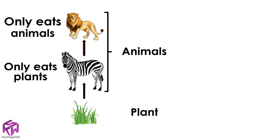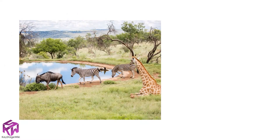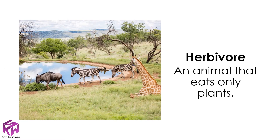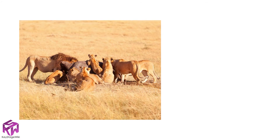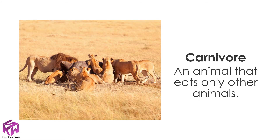We have special words for this. An animal that eats only plants is called a herbivore, while an animal that eats only other animals is called a carnivore.